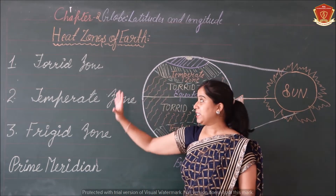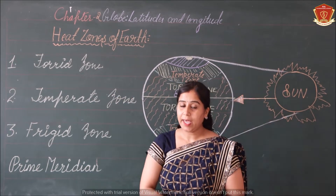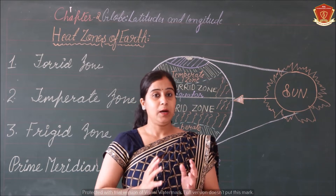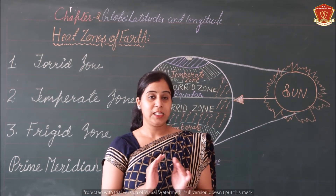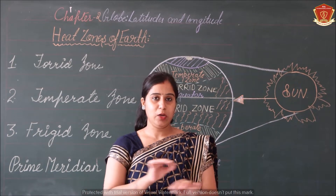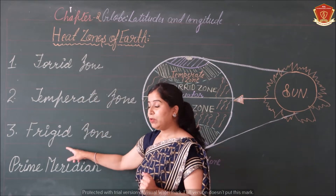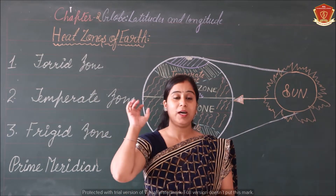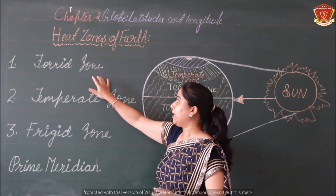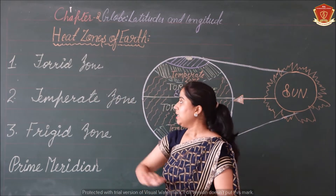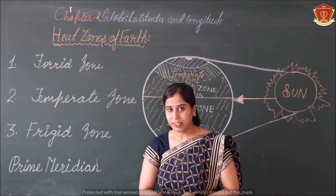Your earth is basically divided into three zones. Aapki jo dharti hai, woh three zones mein divide hai. These zones are imaginary — no boundary is there, no line is physically drawn. It is particularly divided in terms of the sun rays received. First zone hai — Torrid zone. Second hai — Temperate zone. Third hai — Frigid zone.